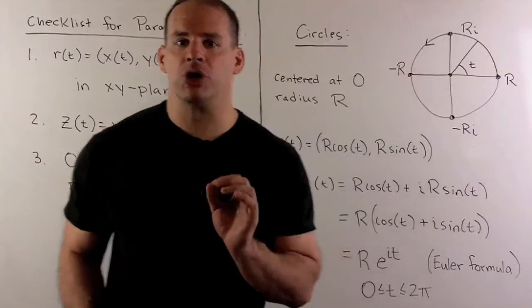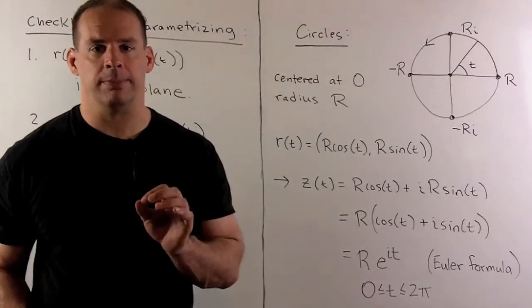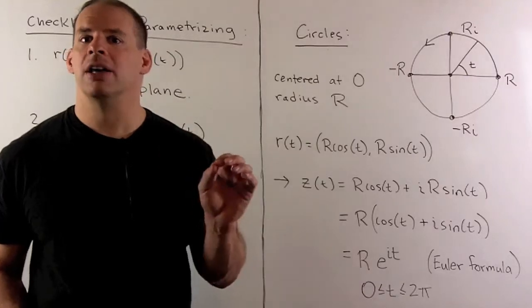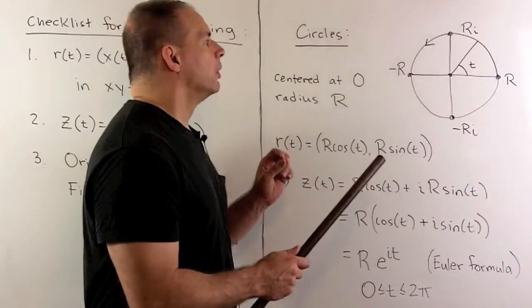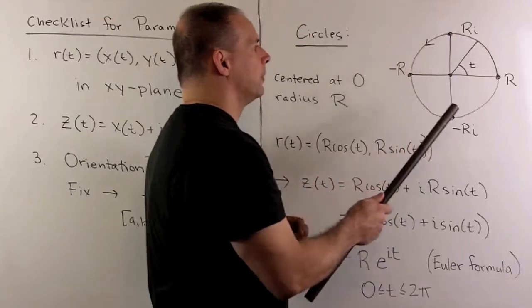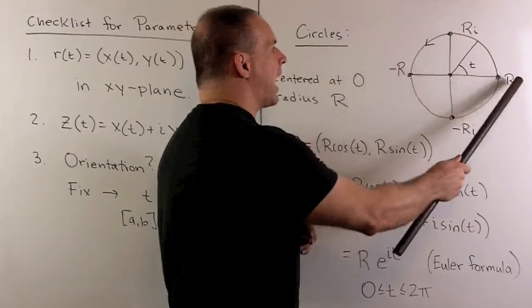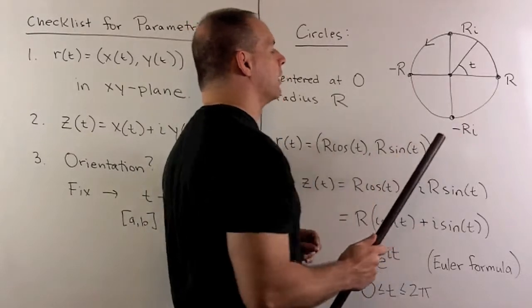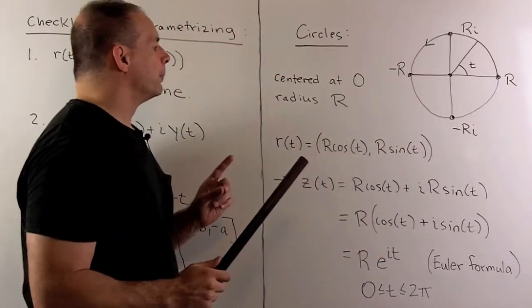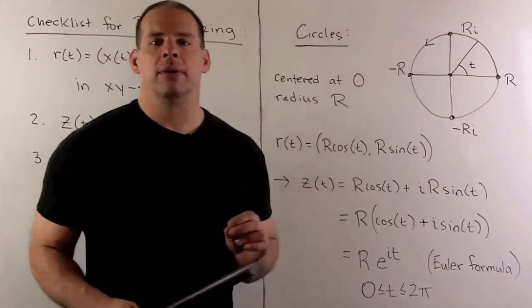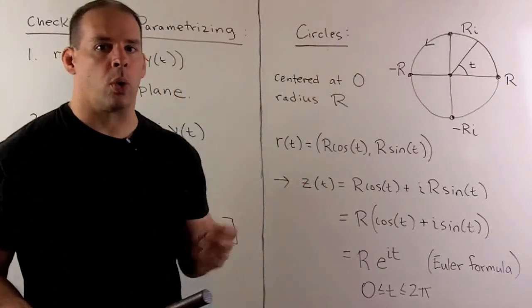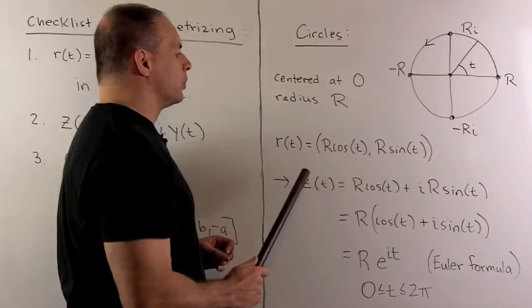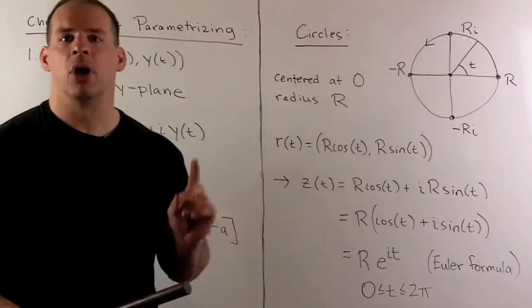If we want to parametrize circles in the complex plane, let's start with the basic case of circle of radius R centered at zero. Points that will be on the circle, we'll have R on the real axis, R times i on the y axis, and then minus R, minus Ri. If we think in terms of the xy plane, we can use polar coordinates. To get points on this circle, I can just use r of t equal to R cosine of t, R sine of t.